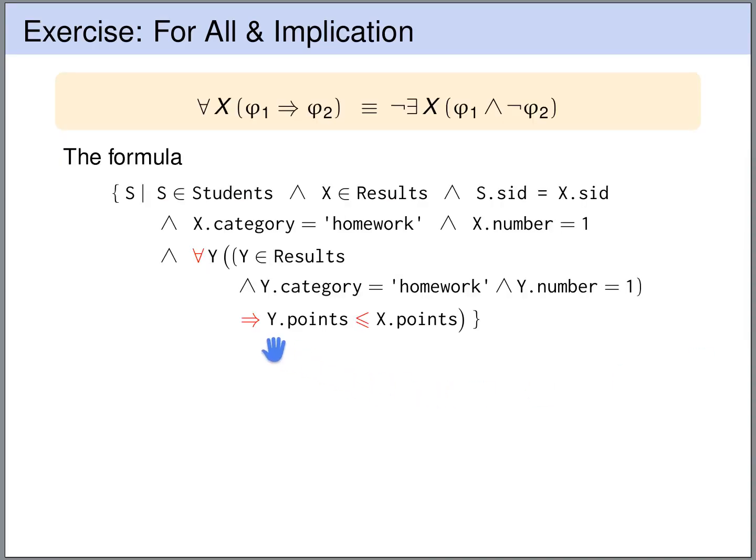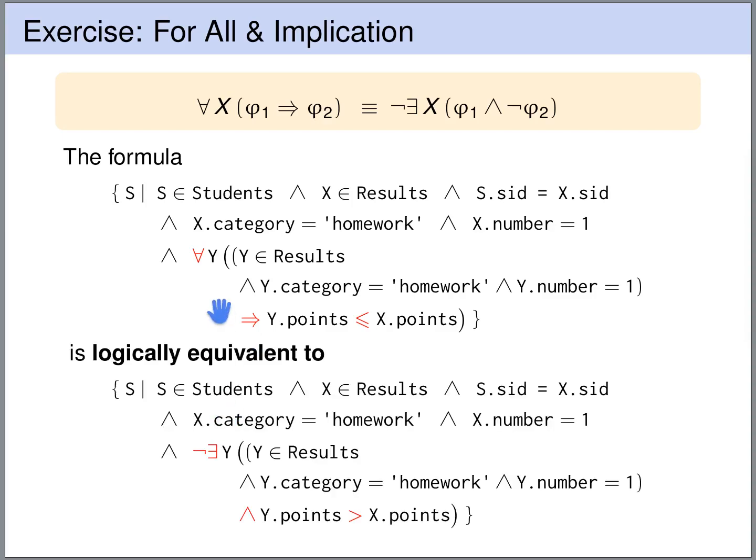If you look at this query, then you see that we have precisely the pattern that we discussed a few slides ago, a for all with an implication in the body. So we have this form of pattern. And a few slides ago we argued that this is equivalent to this pattern. So we are replacing the for all and the implication. The for all becomes the not exists, the implication becomes an and, and the phi 2 is negated. So the negation of y.points smaller or equal x.points is y.points greater x.points.